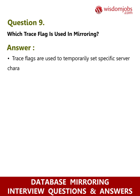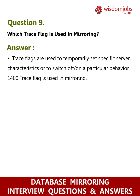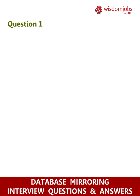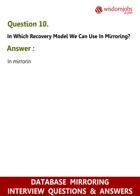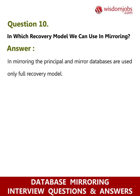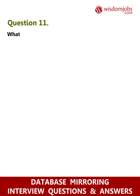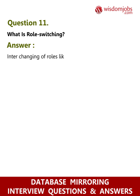Question 9: Which trace flag is used in mirroring? Answer: Trace flags are used to temporarily set specific server characteristics or to switch on or off a particular behavior. Trace flag 1400 is used in mirroring. Question 10: Which recovery model is used in mirroring? Answer: In mirroring, the principal and mirror databases use only the full recovery model.